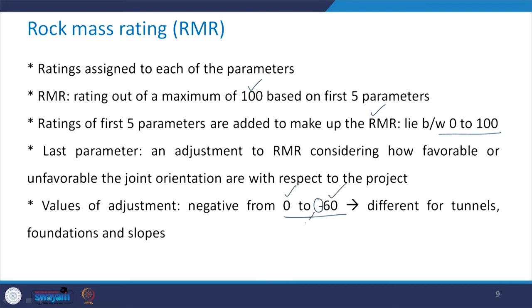The adjustment values are negative and vary from 0 to −60, and these values are different in the case of tunnels, foundations, and slopes. So we have different adjustment values for each of these structures.